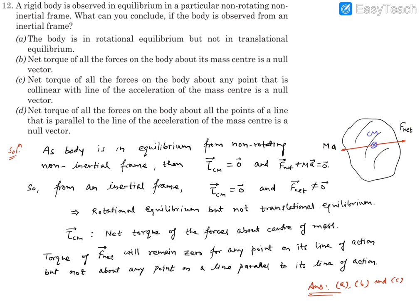This pseudo force must be balancing all other forces' net value so that the net force becomes zero from that non-inertial frame. So we can claim that the net force acting on the body is going to be equal to Ma in magnitude. Second, it has to be along the same line and acting at the center of mass, because the pseudo force acts at the center of mass location. So the net force also should be acting on the center of mass, with the same line of action, so that their torque is also zero.